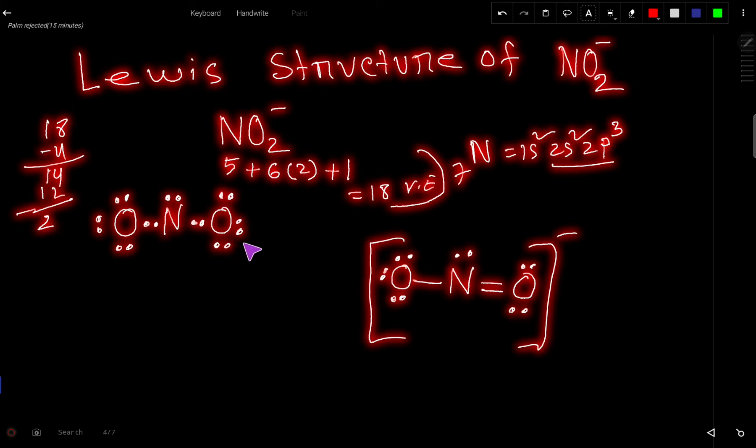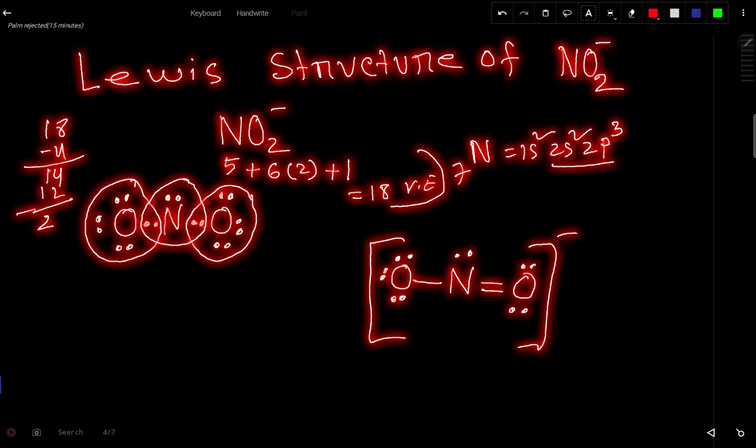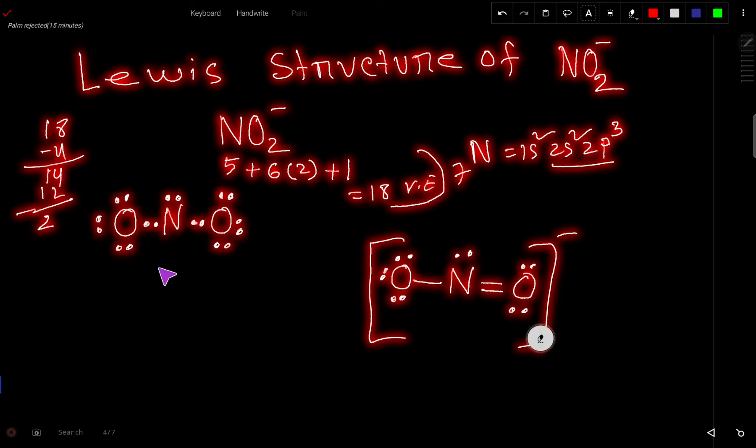Now look. This oxygen has 8 valence electrons. This oxygen also has 8 valence electrons. But this nitrogen has only 6 valence electrons. So to satisfy the octet of this central atom, what will we do?